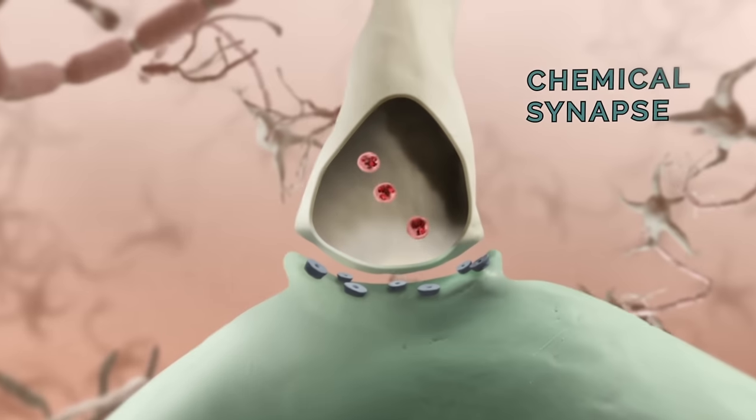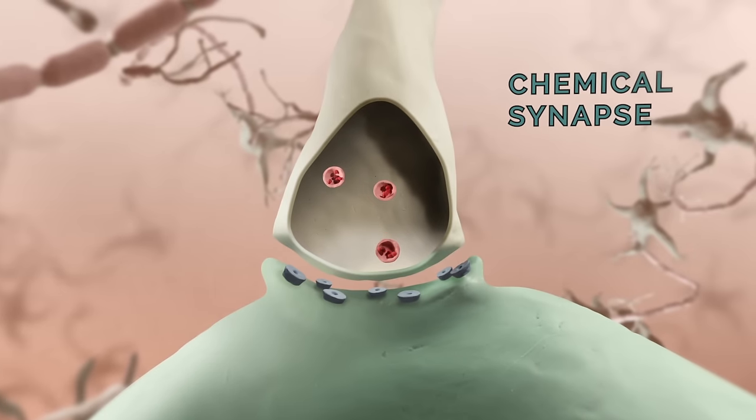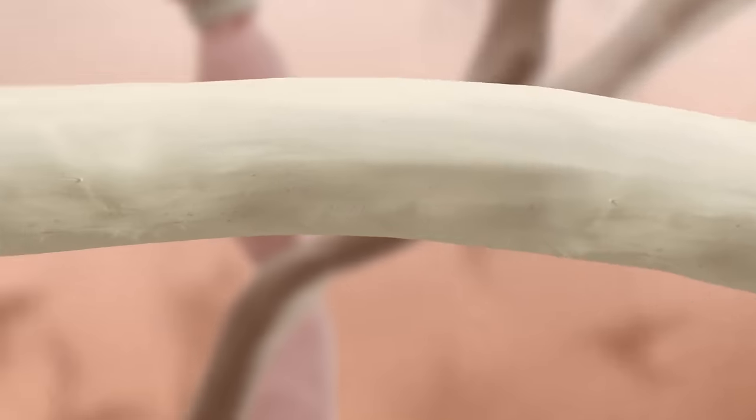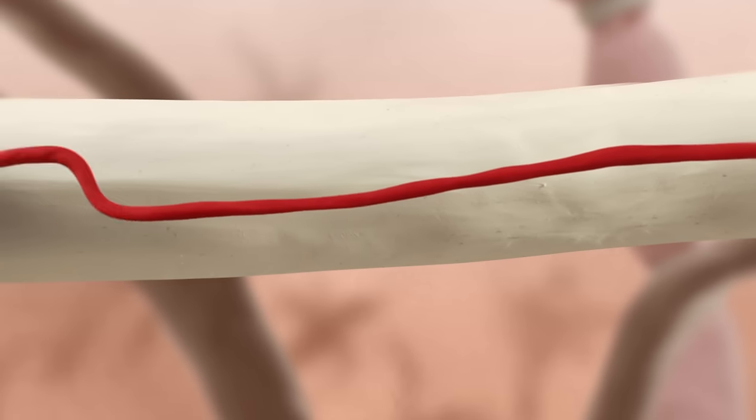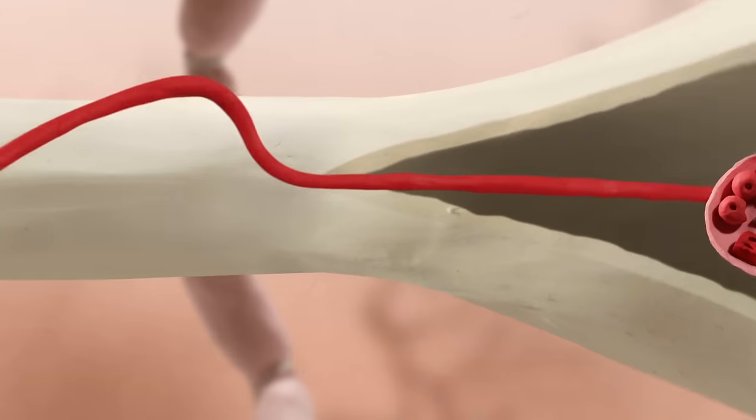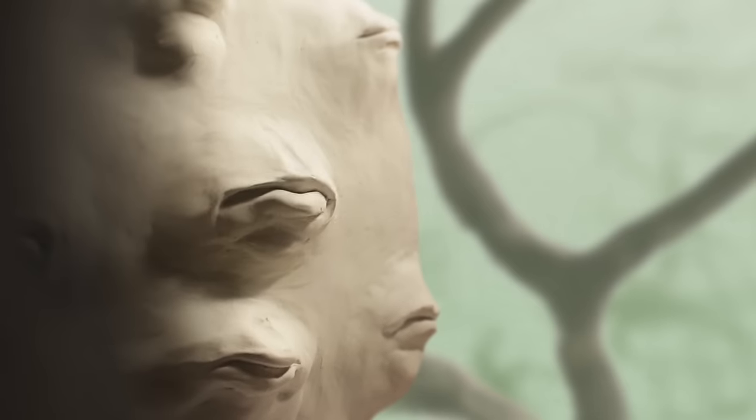But most neurons are connected together by a much more complicated structure called a chemical synapse. In a chemical synapse, rather than simply passing along an electrical signal from one cell to another, the action potential travels to the end of the axon and causes a chemical to be released into a very small space between the two neurons called the synaptic cleft.